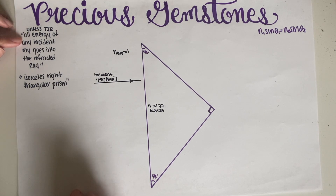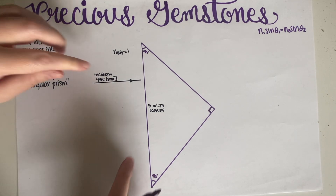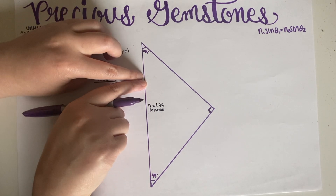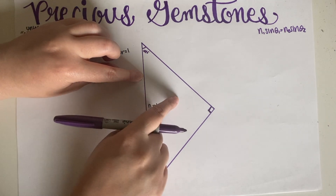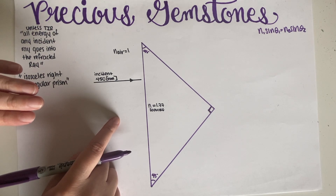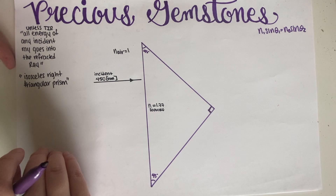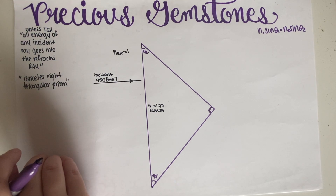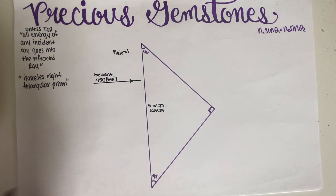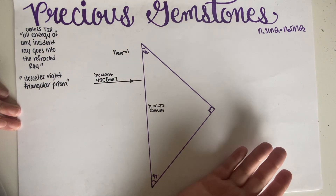For the second part of the instructions: there is never going to be a split between refracted and reflected energy. It is either total internal reflection — everything bounces — or otherwise everything goes as refracted. So I'll go interface by interface, figuring out what happens each time.